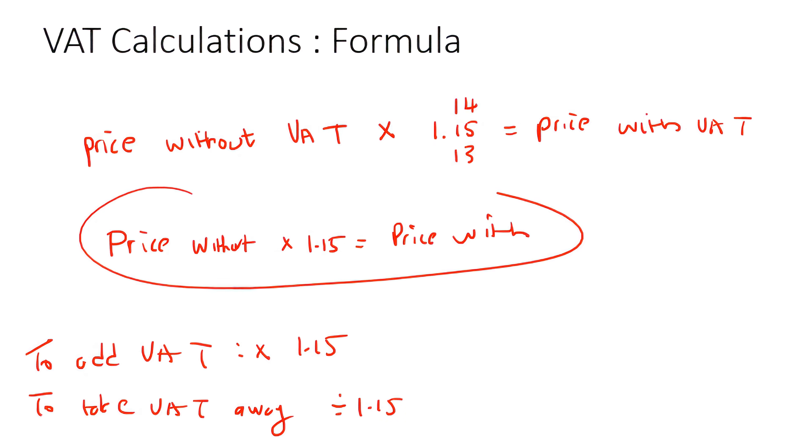That's actually what this formula is going to do. So to add VAT onto an item, so let's say you have an item that doesn't have any VAT. To add the VAT on, you just multiply by 1.15. To take the VAT away, you just divide by 1.15.